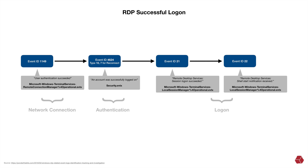Before we get started, there is one important thing to keep in mind. All of these event IDs and their corresponding logs are going to be found on the target system — in other words, not the system from which the RDP connection is initiated, but rather the system to which the RDP connection is destined.